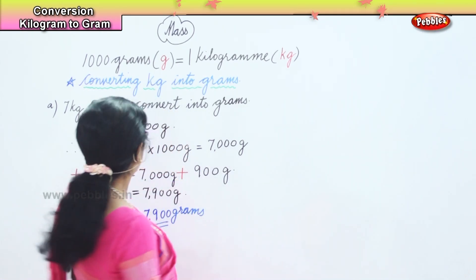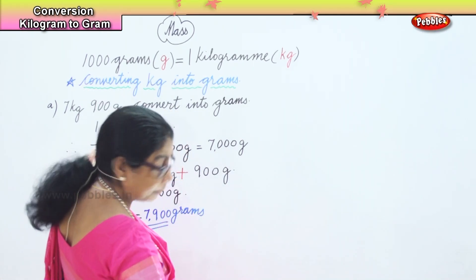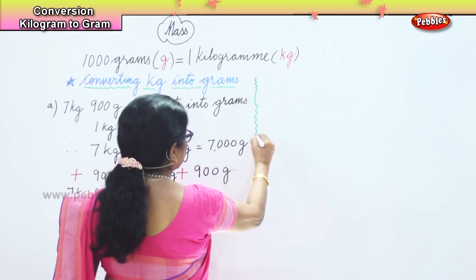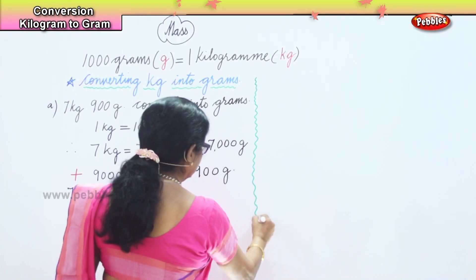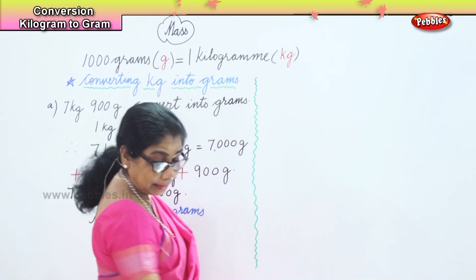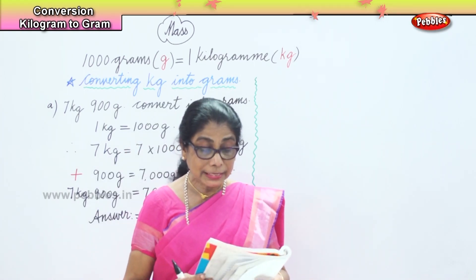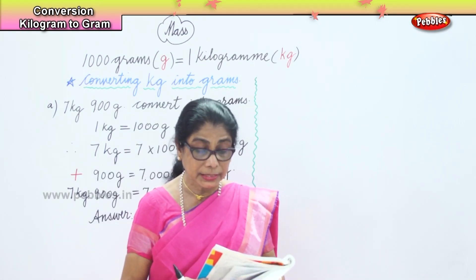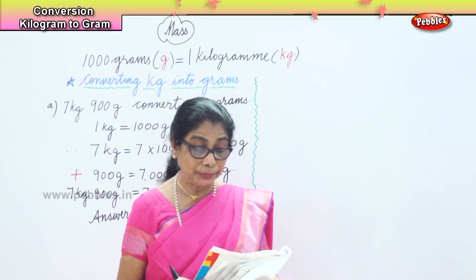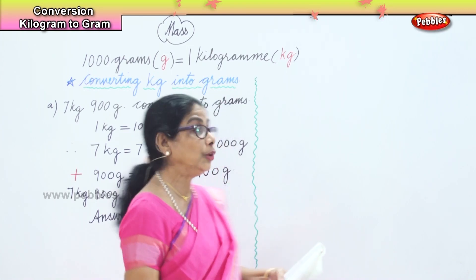Now we will work out another sum. The next sum is: convert 16 kilograms and 200 grams into grams.